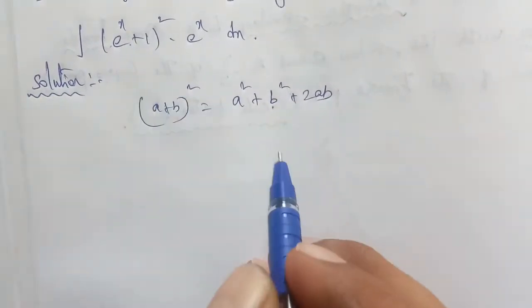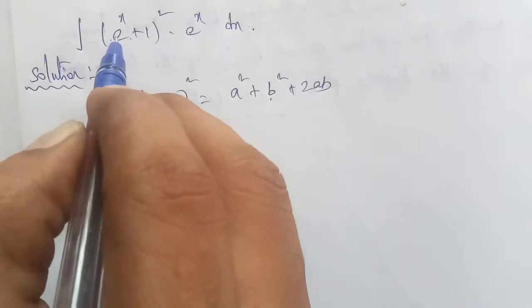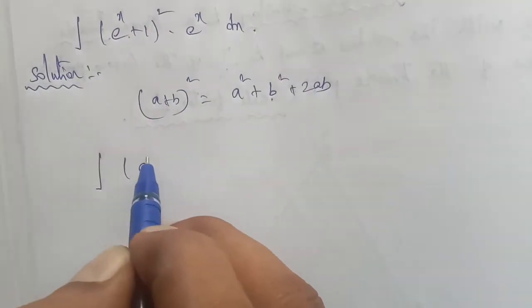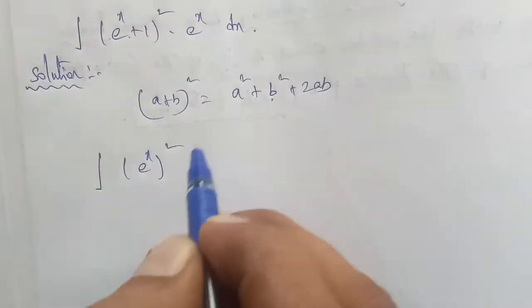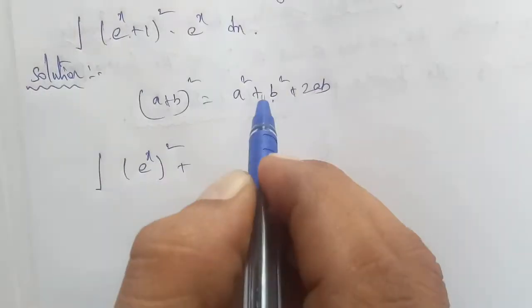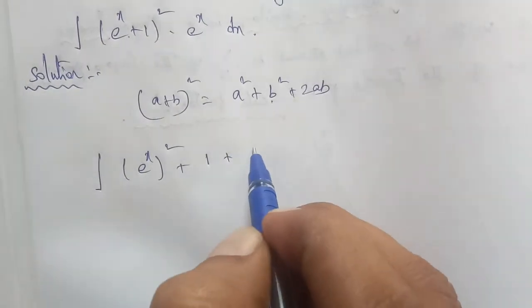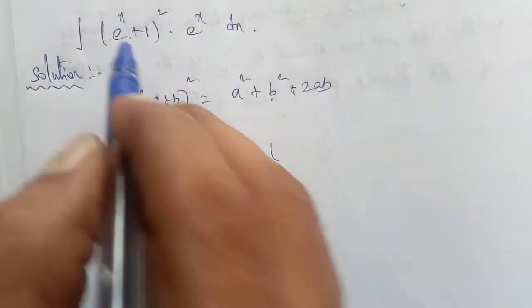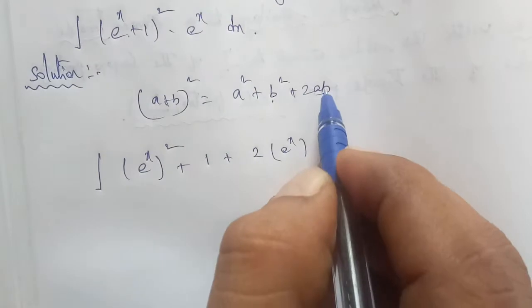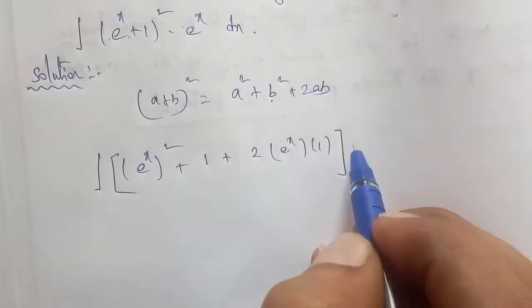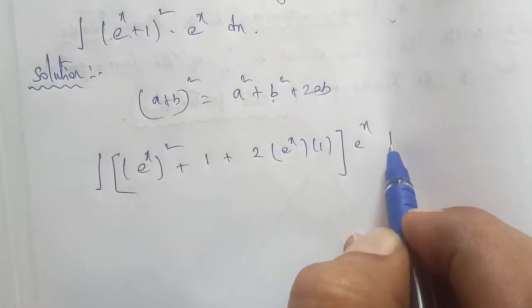So in the formula, a is e^x and b is 1. Therefore, integration of (e^x + 1)^2: (e^x)^2, this is a^2, plus b which is 1, 1^2 is 1, plus the formula 2ab - 2 times e^x times 1. So we get (e^x)^2 + 1 + 2*e^x, multiplied by e^x dx.